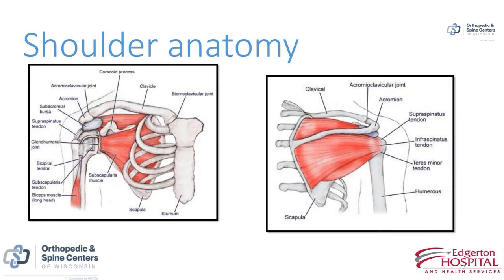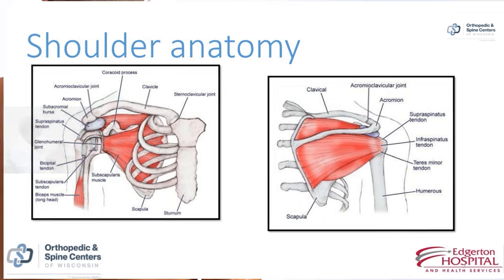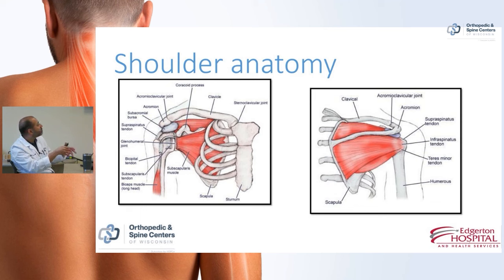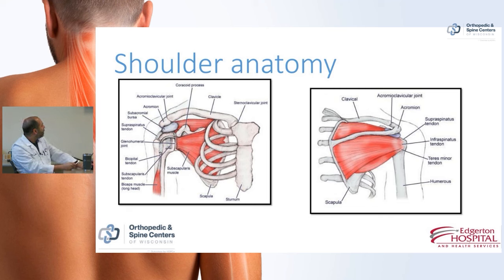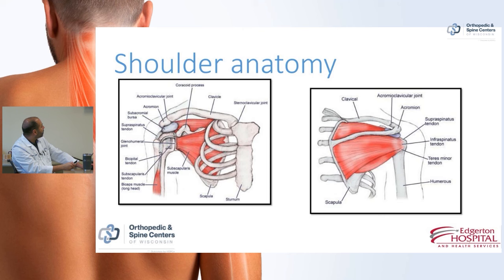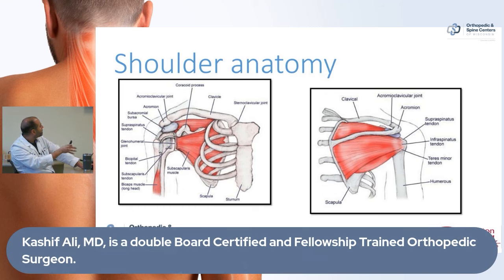Surrounding that bony anatomy are muscles. There are large superficial muscles visible on bodybuilders that cover the outside of the shoulder, but there are also smaller, deeper muscles within the shoulder that can cause pain. One layer of those deeper muscles is the rotator cuff — a sleeve of muscles that surrounds the ball of the shoulder joint. Looking at a schematic from the front and back, the pink structures are muscles and the white structures connecting them to bone are tendons. This shows how much soft tissue surrounds the shoulder to stabilize the ball in the socket.